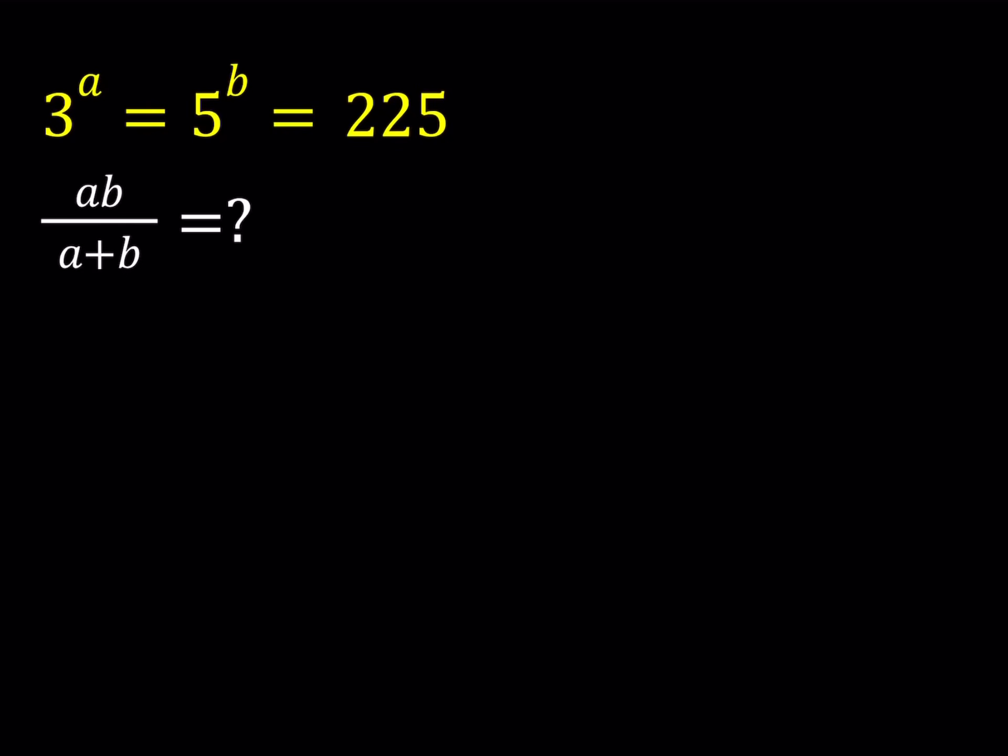Hello everyone. In this video, we're going to be solving an exponential system, kind of. We have 3 to the power a equals 5 to the power b equals 225, and we are supposed to evaluate the expression ab over a plus b.